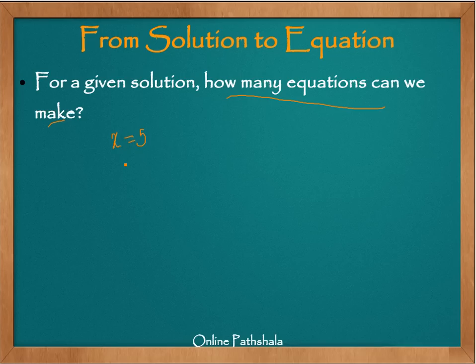So this was about how we can construct an equation if we are given a solution. And the key learning here is that for a given solution, you can come up with many, many number of equations. So if you are asked to make it, you can just make one equation of your liking and that would be valid. The only thing is your left hand side must evaluate to the right hand side.